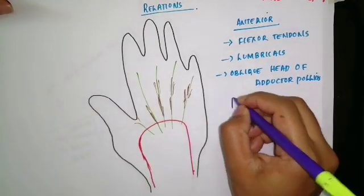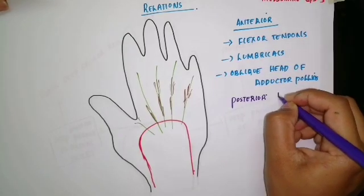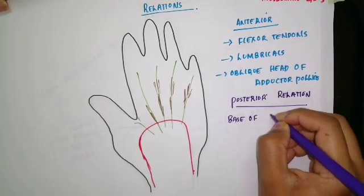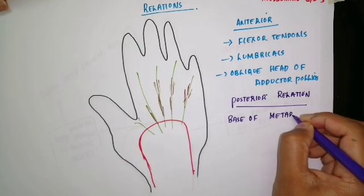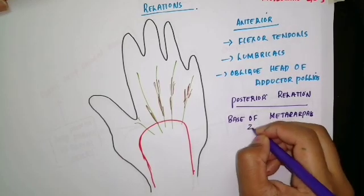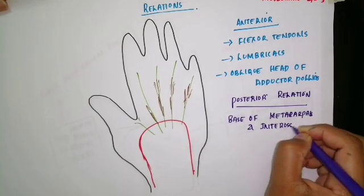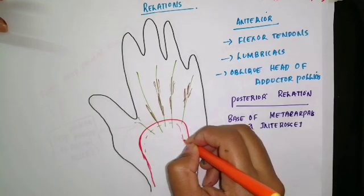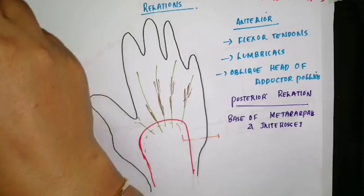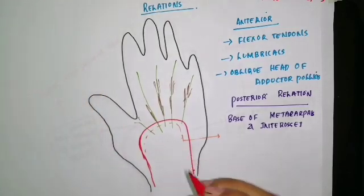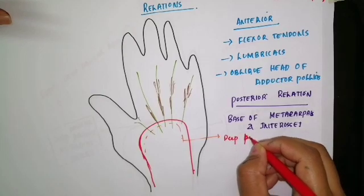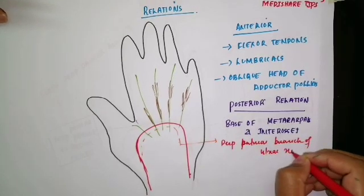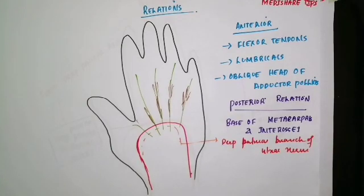The posterior relations of the deep palmar arch are the bases of the metacarpals and the interossei muscles. You can also see a structure lying in the concavity of the deep palmar arch — that is the deep palmar branch of the ulnar nerve, which lies within the concavity. That is all about the relations of the deep palmar arch.